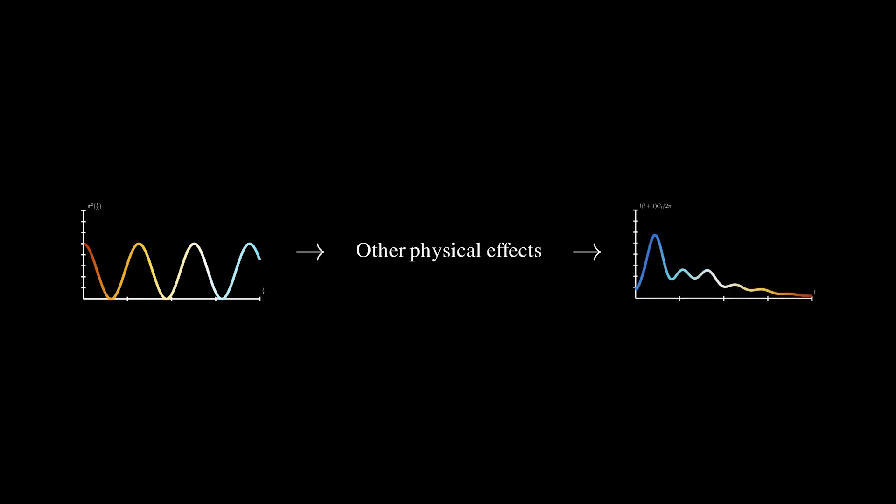Thus, the uniform spacing of the peaks in the CMB power spectrum is in agreement with the idea that the plasma of the early universe contained oscillating waves that started from rest.